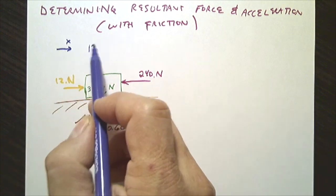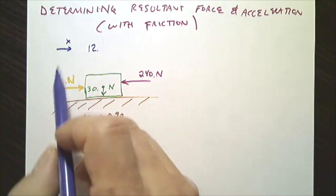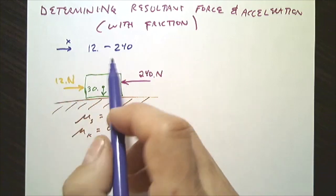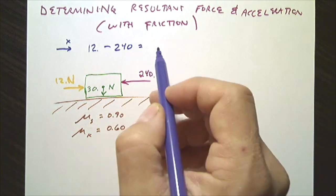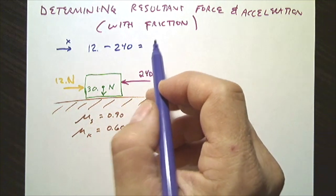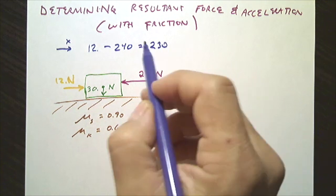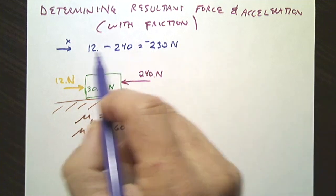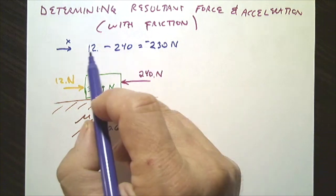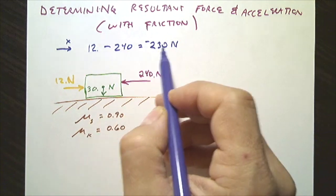With 12 in the positive x-direction, minus 240 in the x-direction, that would give us 230 newtons negative. Notice that it's actually 228, but with two significant digits, we have 230.